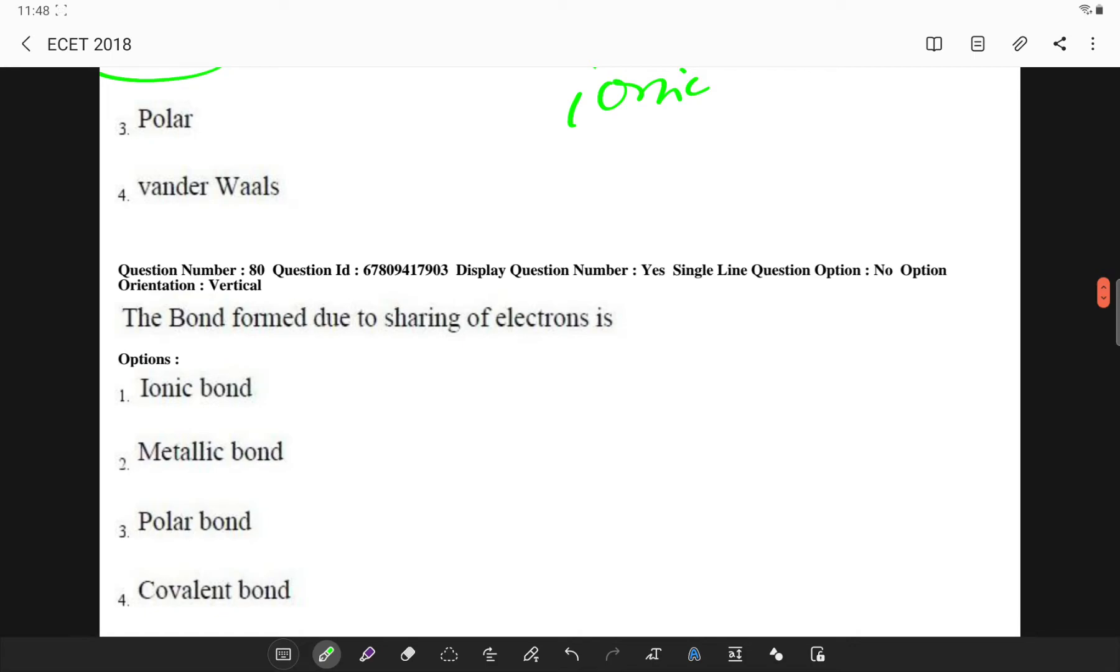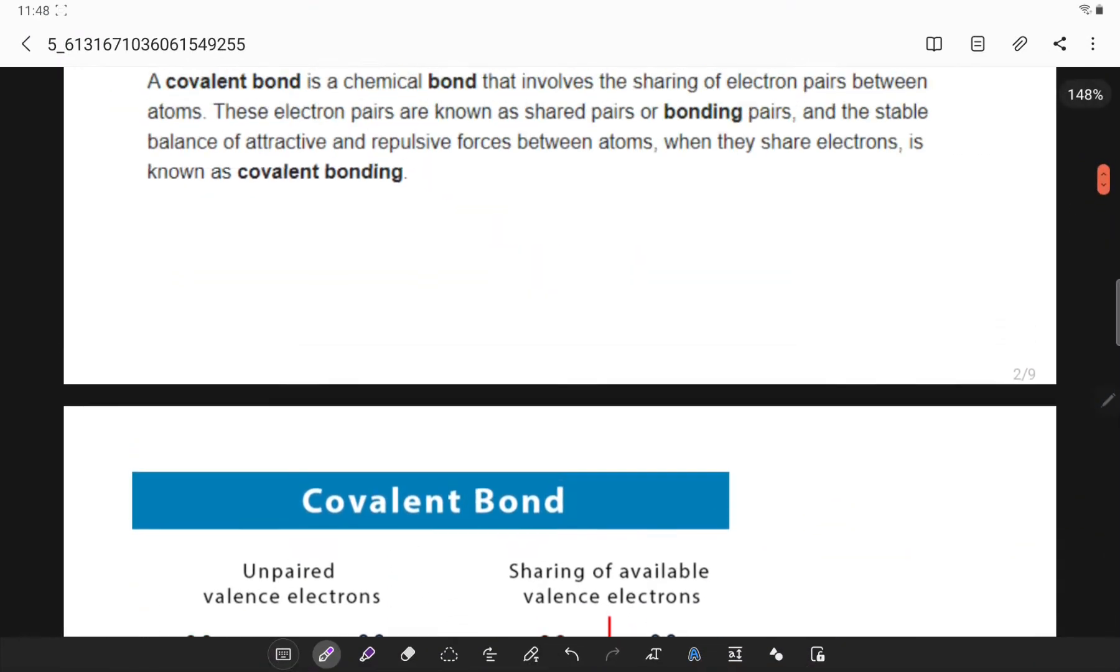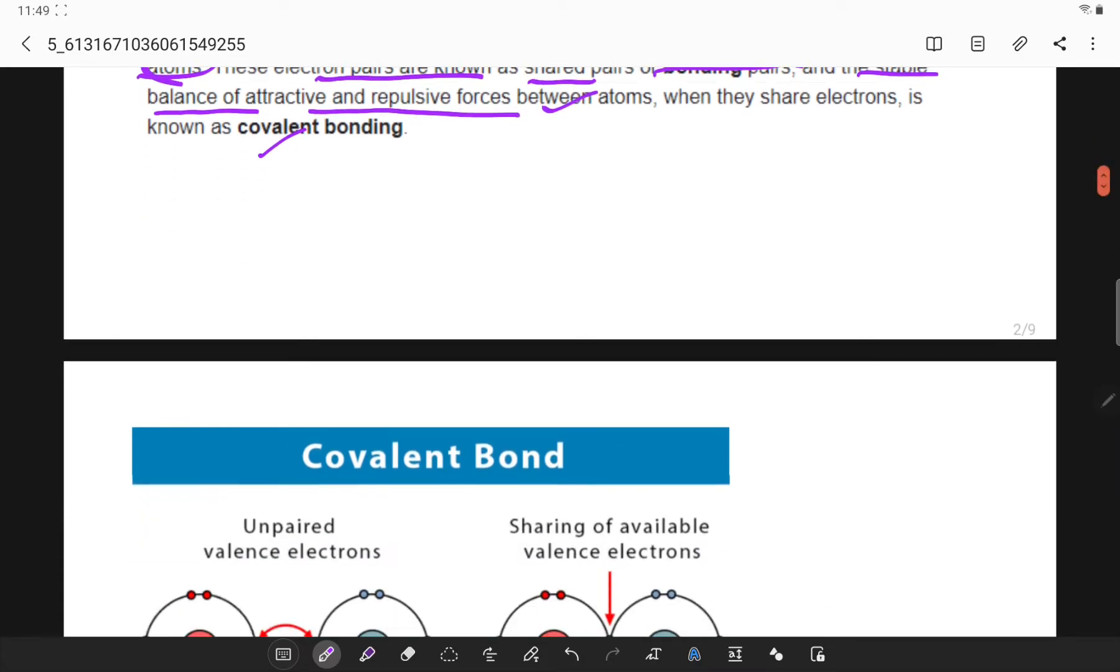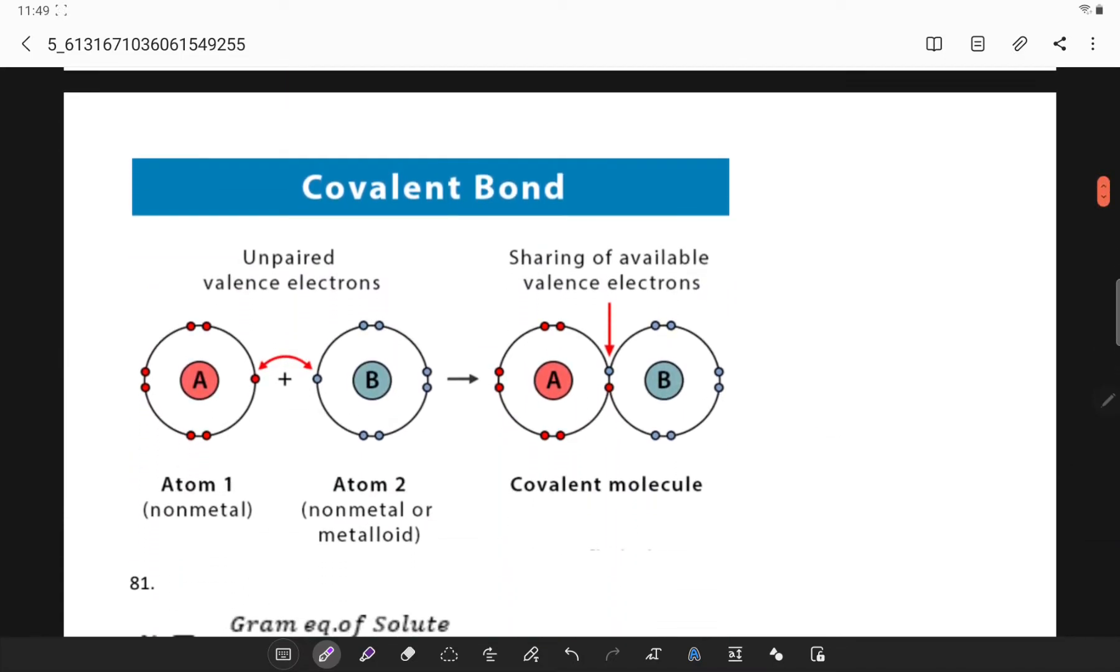The bond formed due to sharing of electrons. So whenever you have this concept of sharing, it is simply covalent bond. So covalent bond is a chemical bond that involves sharing of electron pairs between the atoms. These electron pairs are known as shared pairs or bonding pairs in the stable balance of attractive and repulsive forces between atoms and it is known as covalent bonding.